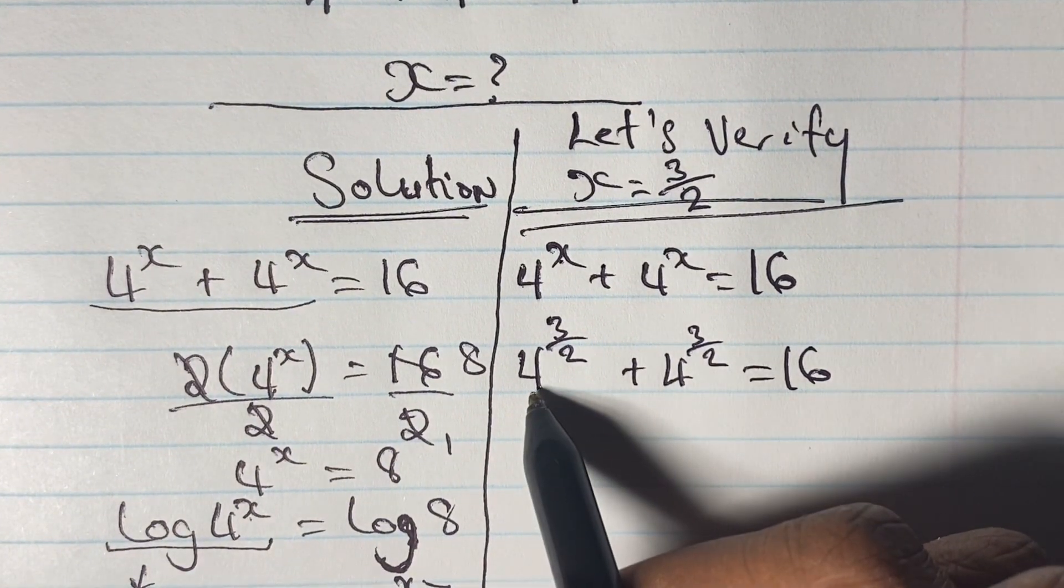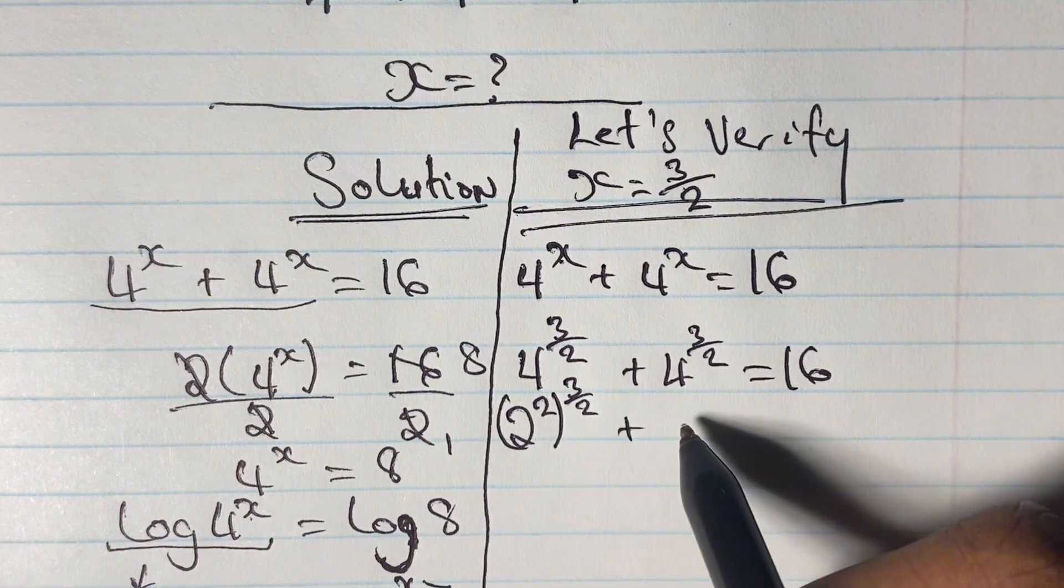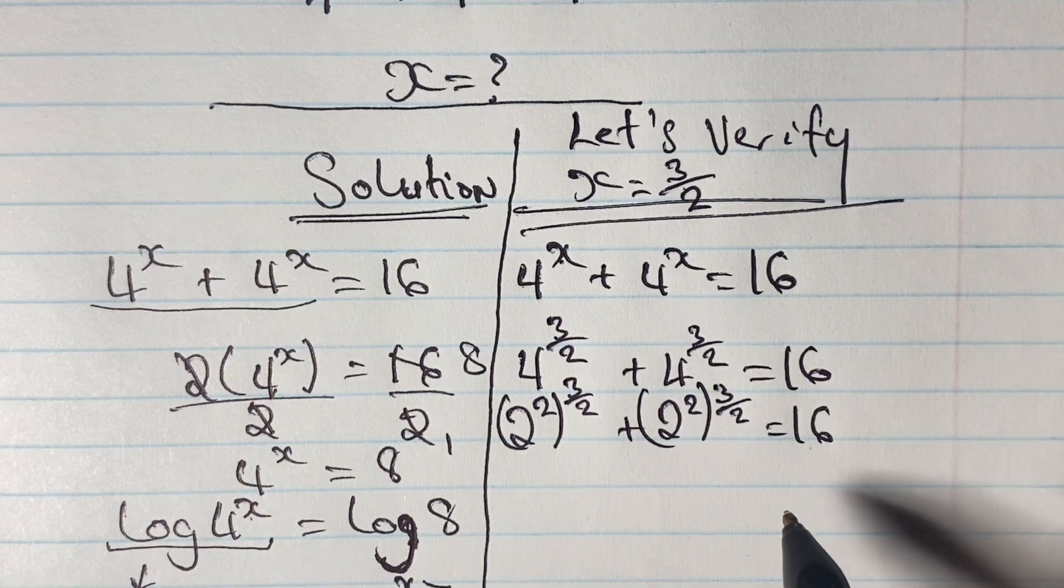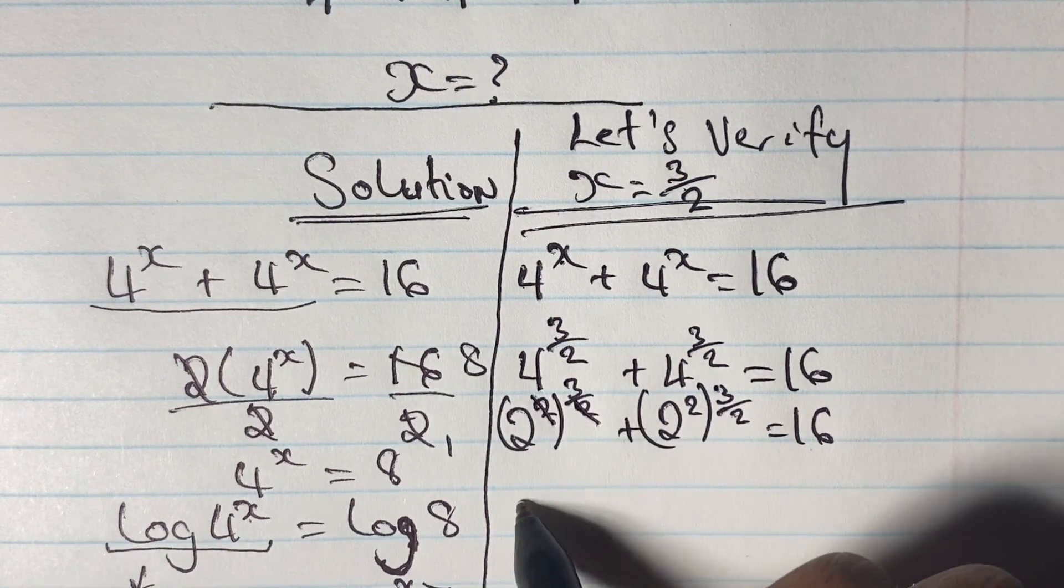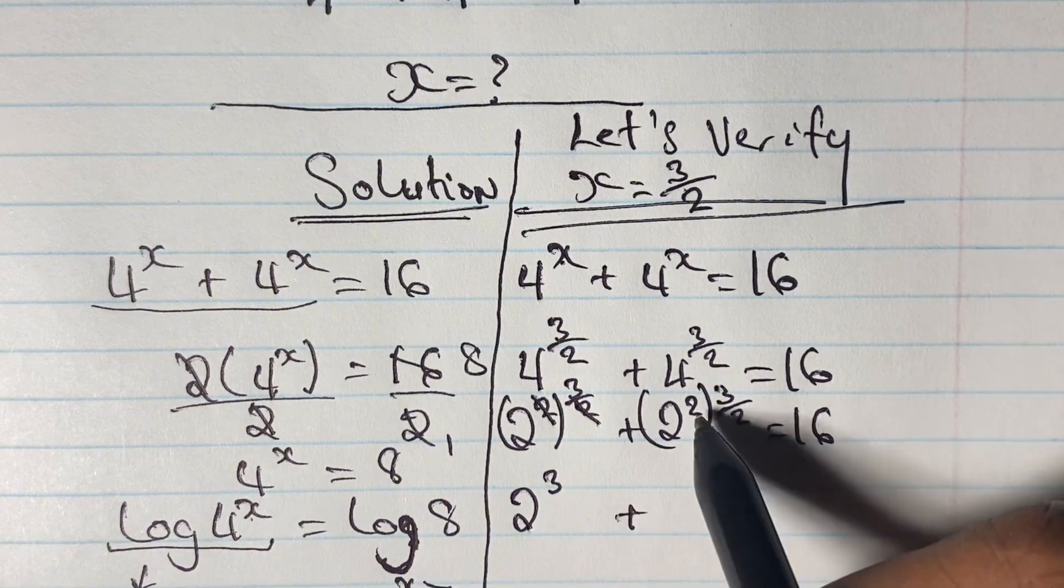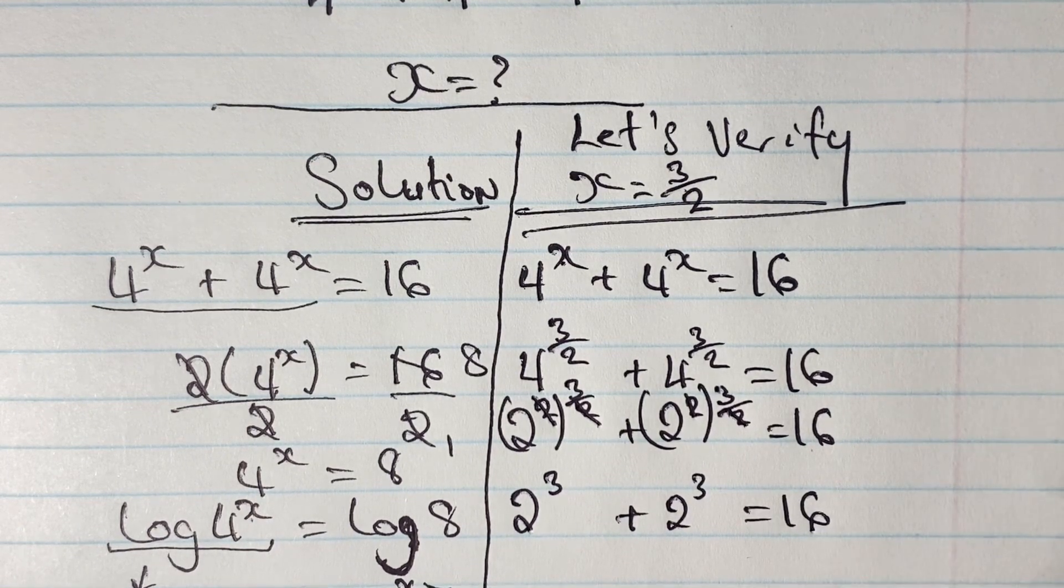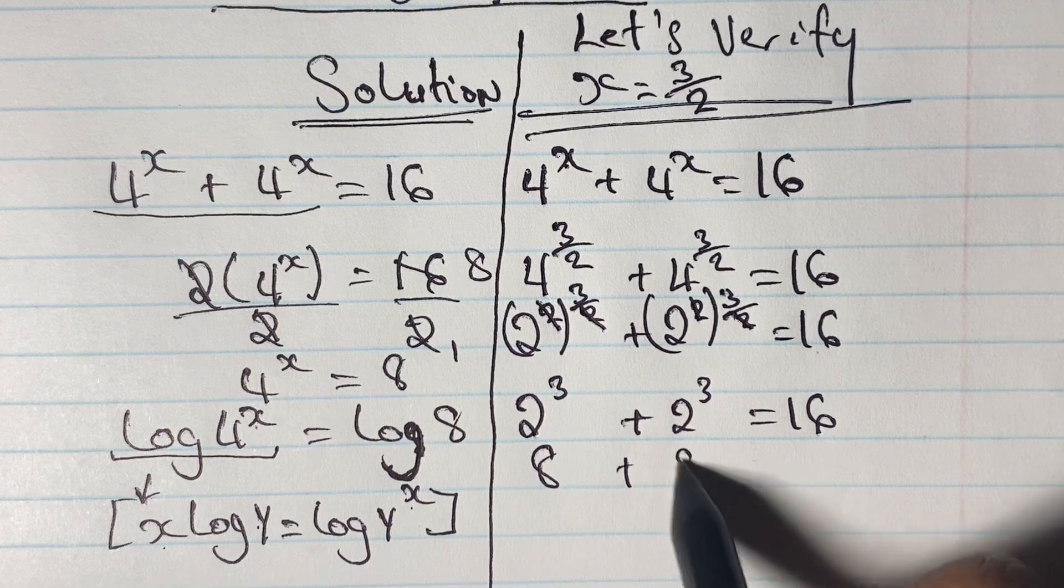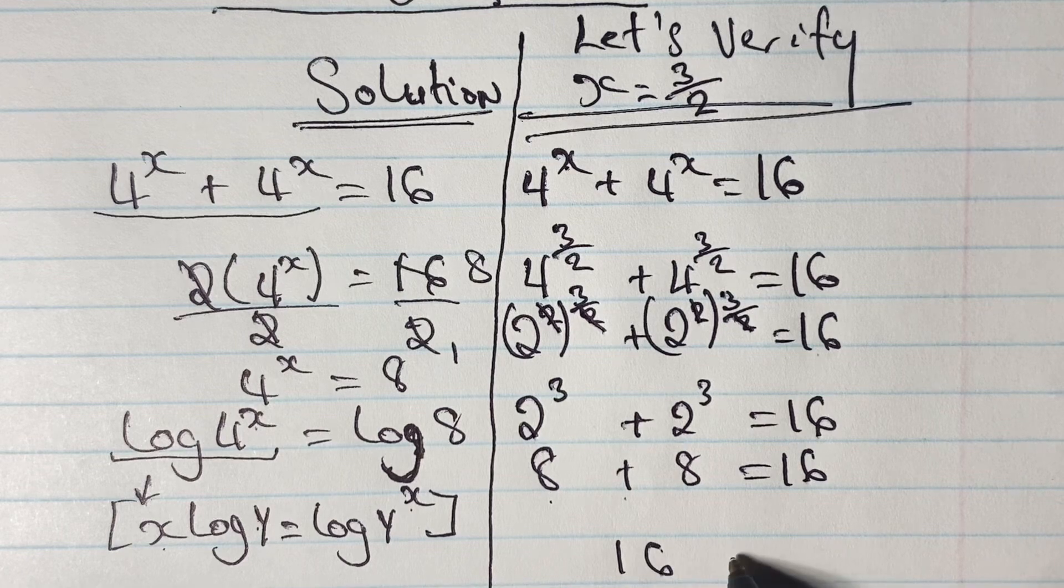Simplifying our equation, we know that 4 is a squared number. So we have 2 squared to the power of 3 halves plus 2 squared to the power of 3 halves is equal to 16. And now if you look carefully, 2 cancels 2. And so we are left with 2 cubed plus 2 cubed is equal to 16. 2 to the power of 3 is 2 times 2 times 2 which gives us 8. And therefore we have 8 plus 8 which equals 16.